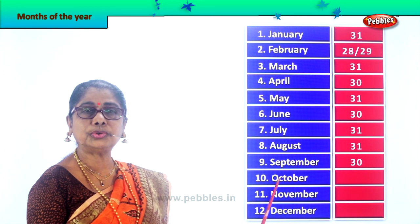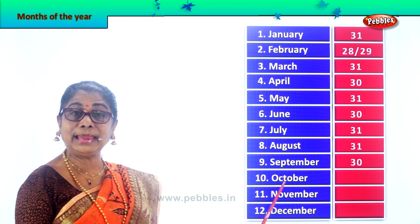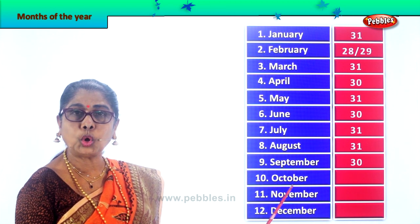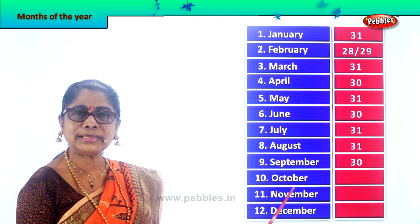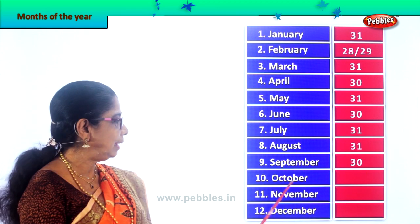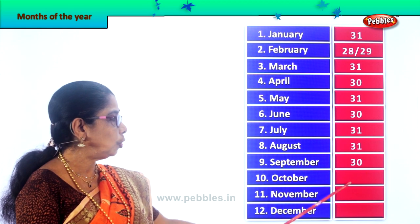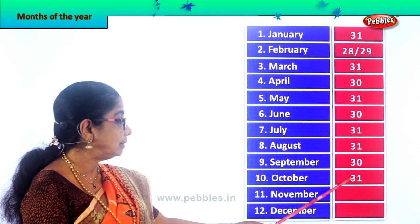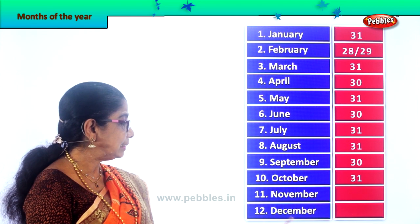Next, school reopens again in October. Spell October — O-C-T-O-B-E-R, October. And October has how many days, children? October has 31 days.